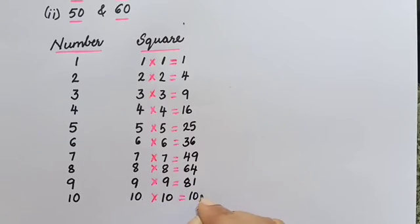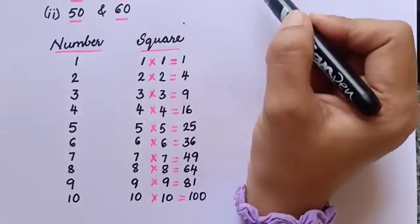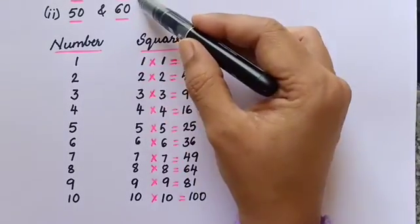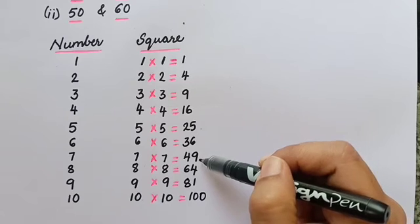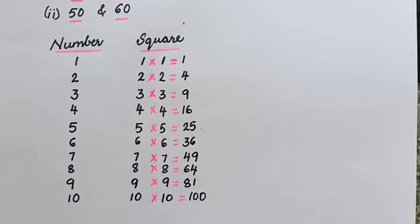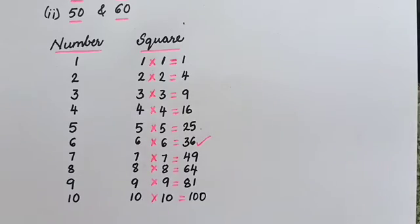Nine times nine is 81, ten times ten is 100. Now, the question is to find the perfect square numbers between 30 and 40. Between 30 and 40, there comes only 36.